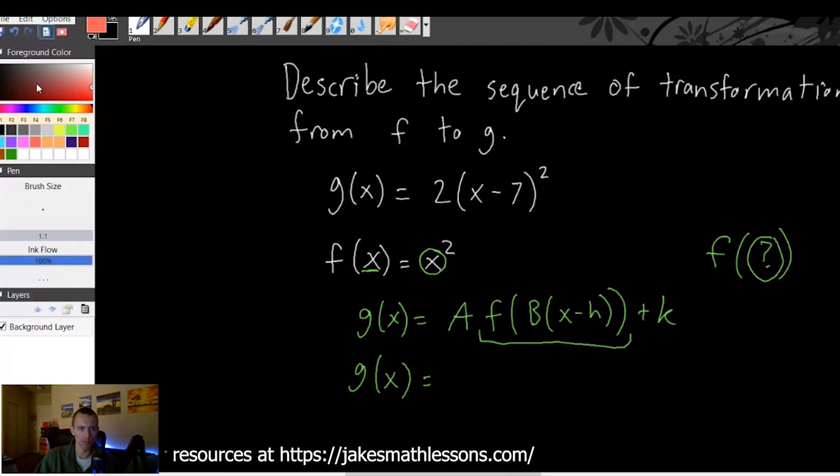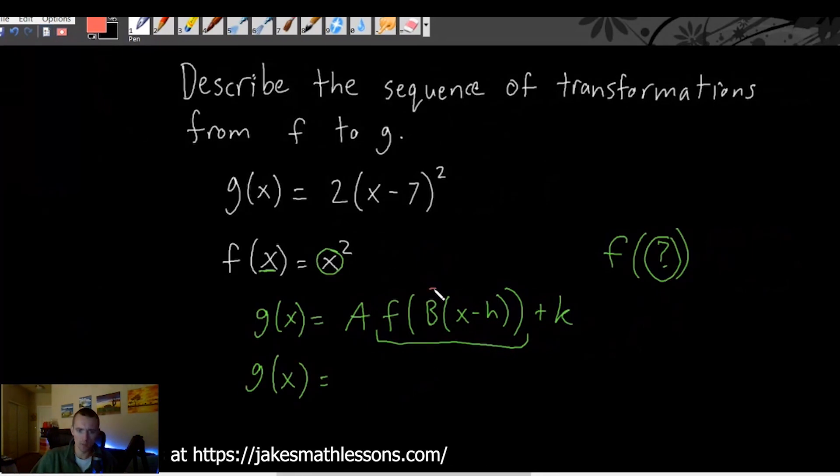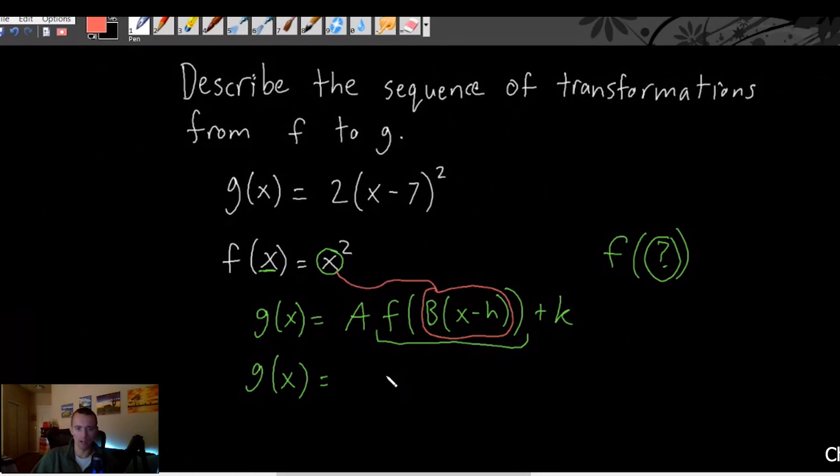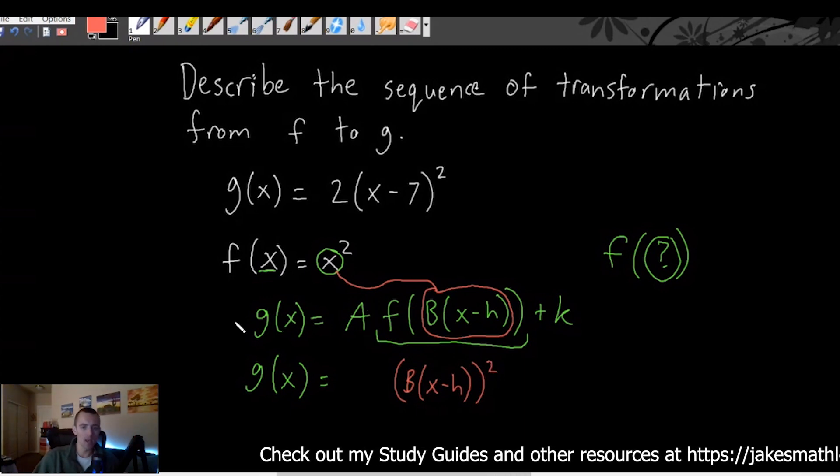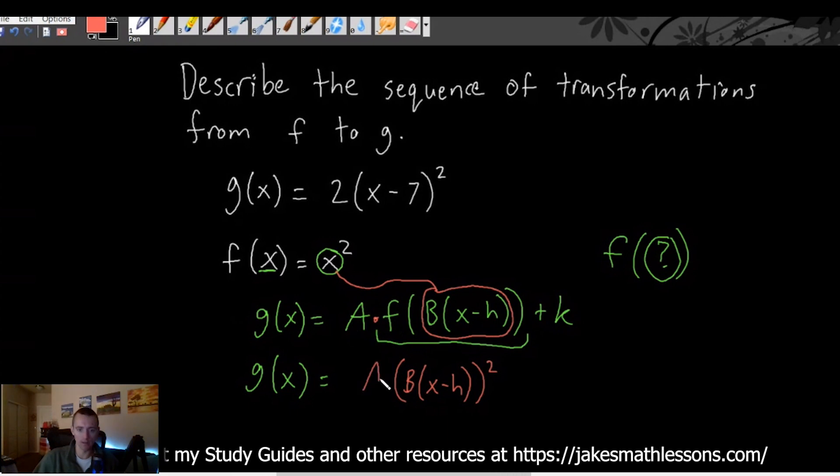So in this case what is in the parentheses is B times (x - h). So we're just going to take this and replace our x with it in our function. If we do that we're going to have (B(x - h))² because we've just replaced our x which was being squared with this whole thing here.